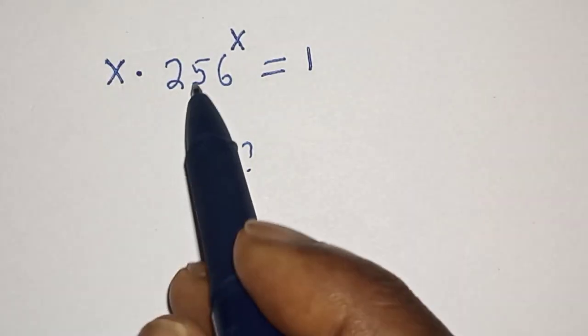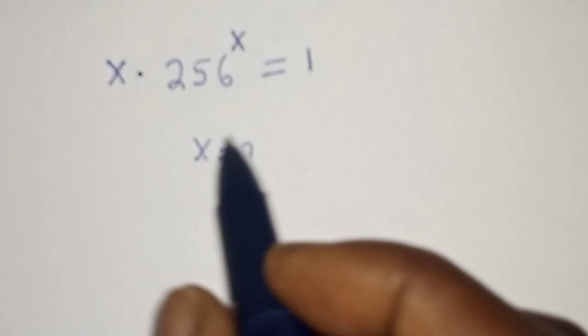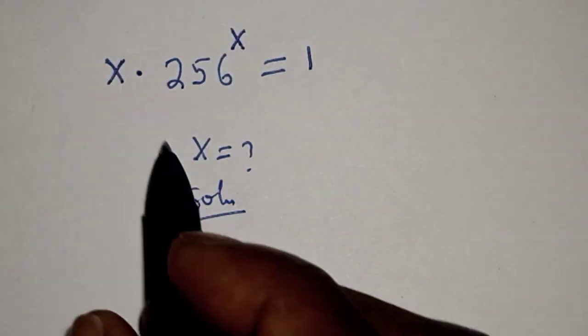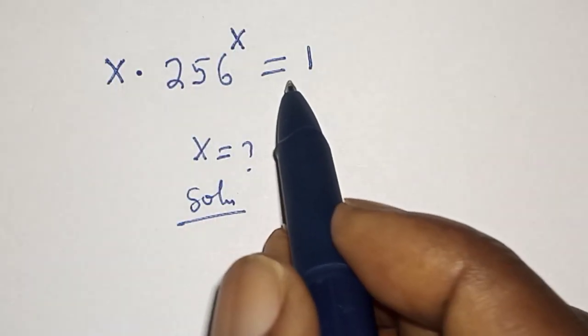Hello, welcome to Magis. In this class we want to find the value of x from this equation. Like, share, comment, and subscribe. Solution: We have x multiplied by 256 to the power of x is equal to 1.